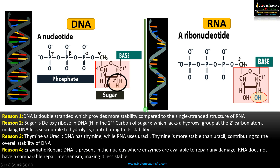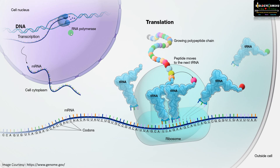The fourth reason is enzymatic repair and the location of DNA. DNA is present primarily in the nucleus, where enzymes are available to repair any damage, whereas RNA does not have a comparable repair mechanism. As shown here, DNA is located inside the nucleus with a robust DNA repair mechanism — whenever there is an error, massive enzyme complexes are involved to repair the DNA if there is a mistake or mismatch during replication. RNA is primarily located in the cytoplasm — mRNA, rRNA, and tRNA are all in the cytoplasm — and there is no comparable repair mechanism, making RNA less stable.